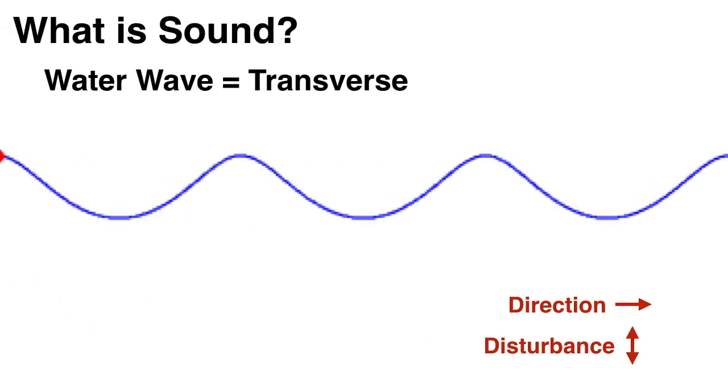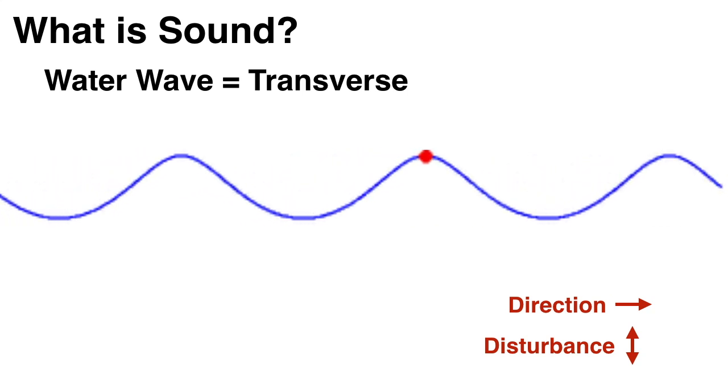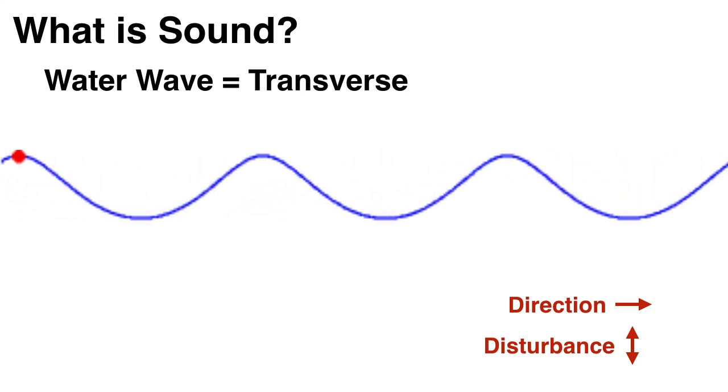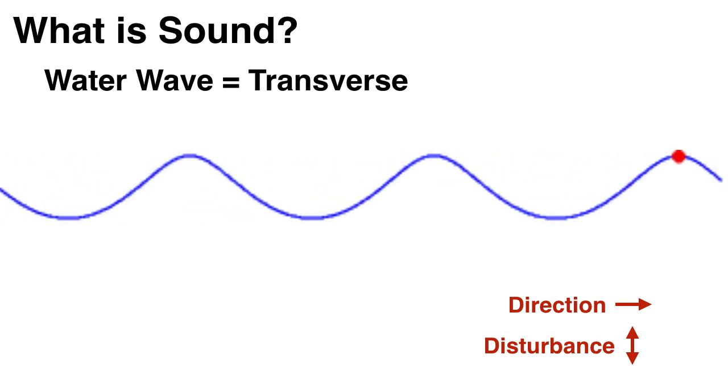But sound waves are different to water waves in one respect. Water waves are transverse. This means that as the wave is moving in one direction, say to the right, it's creating a disturbance in the perpendicular direction, so up and down.